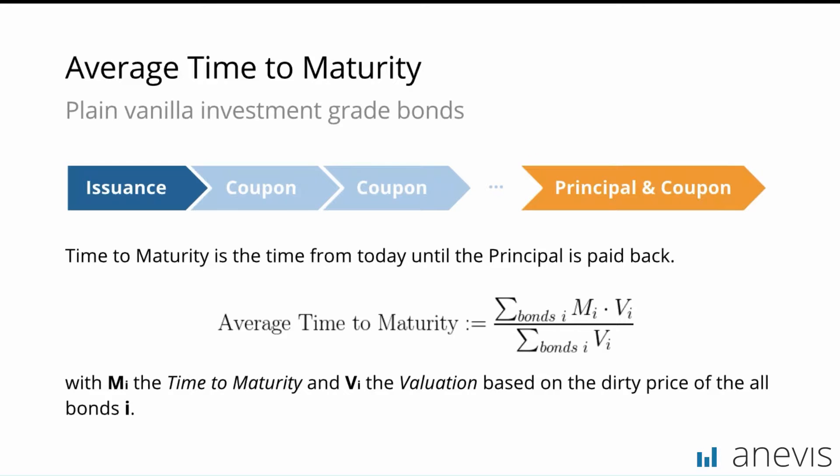For portfolios with only plain vanilla bonds, it's a good measure for interest rate sensitivity. Of course there are other more advanced sensitivity analytics, like for example duration, but we do not want to touch this complexity today. So we will stick with that. The only problem — or actually a very big problem — is that when it comes to more complex bonds, this statistic is quite misleading.